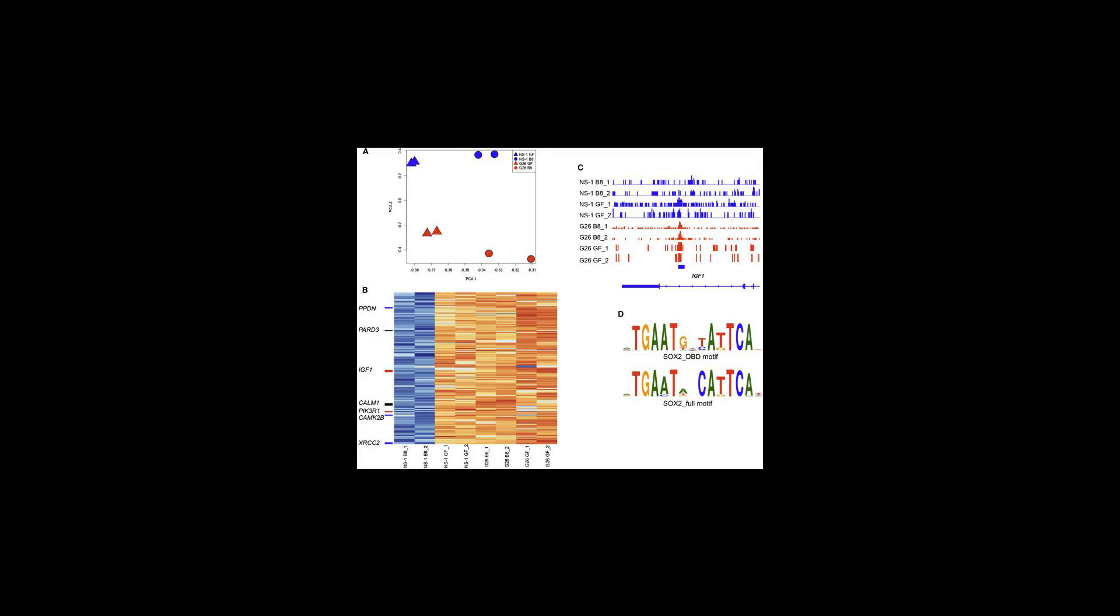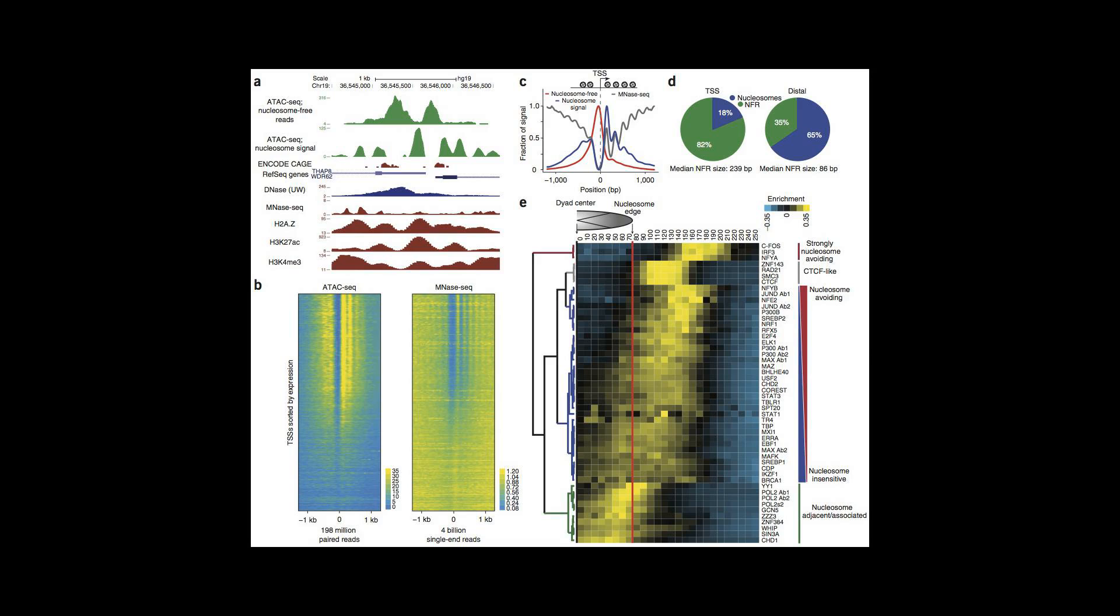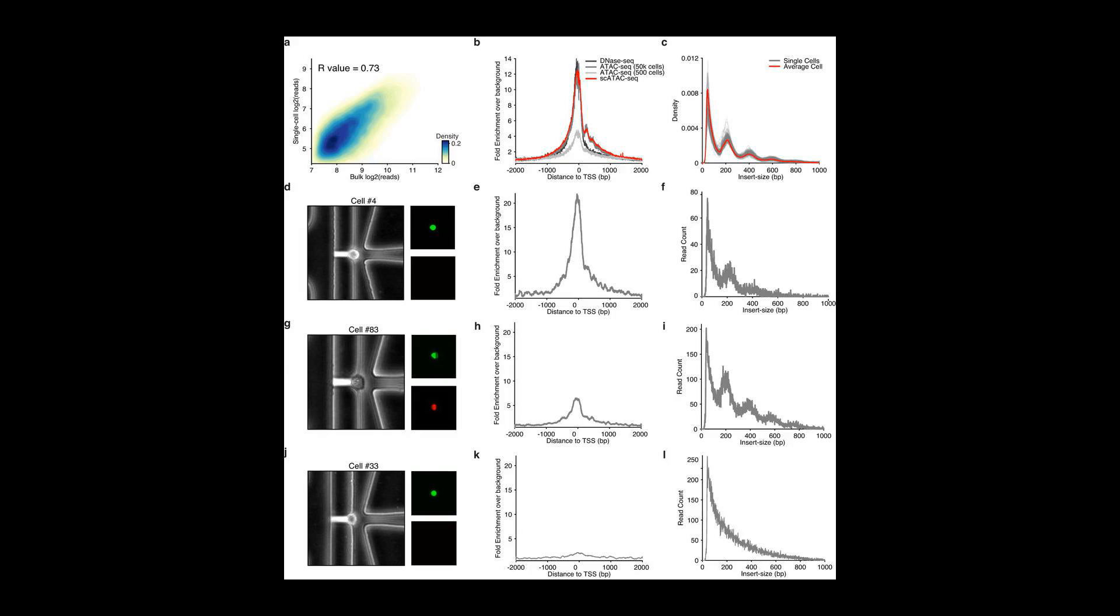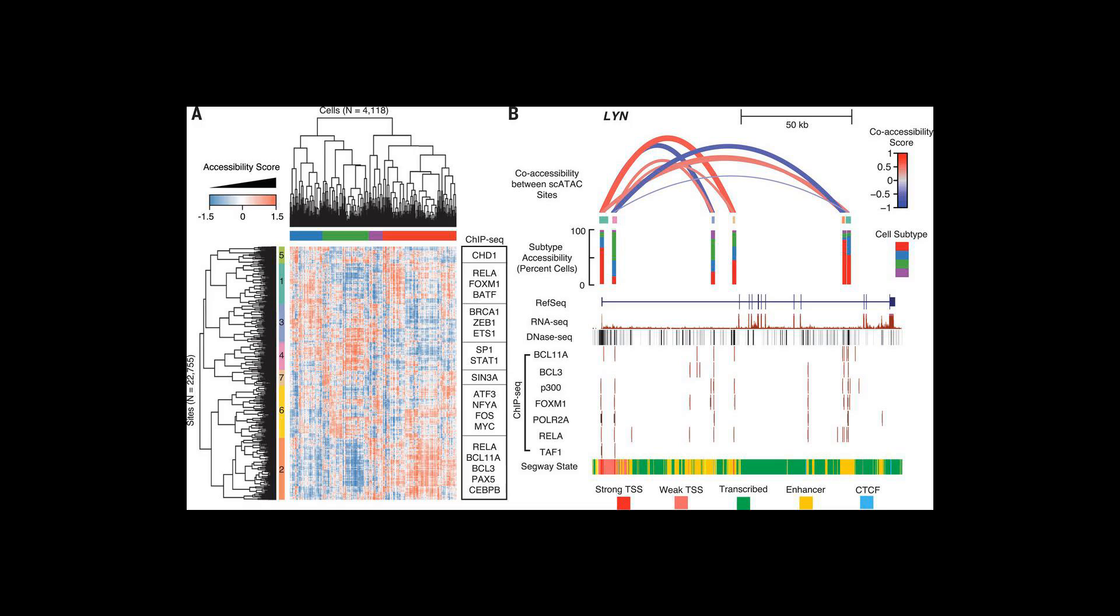Description. The key part of the ATAC-SEQ procedure is the action of the transposase Tn5 on the genomic DNA of the sample. Transposases are enzymes catalyzing the movement of transposons to other parts in the genome. While naturally occurring transposases have a low level of activity,